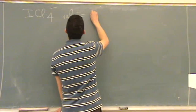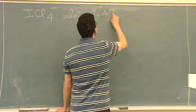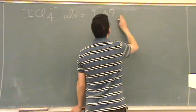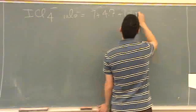So valence equals 7 from iodine, plus 4 times 7 from chlorine, plus one more because it has a minus charge. So that's 7 times 5 is 35, 36.